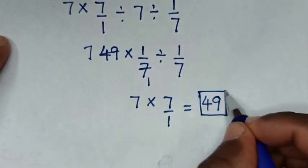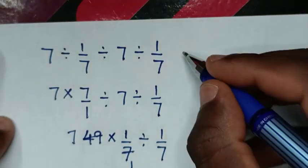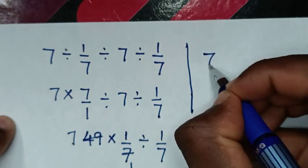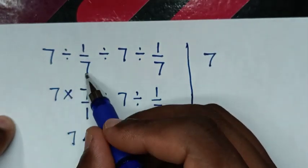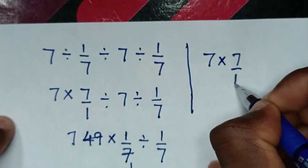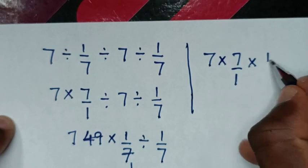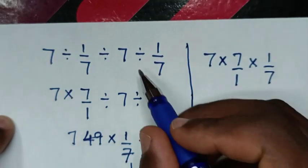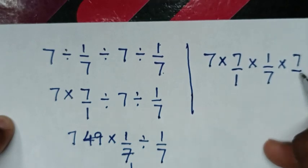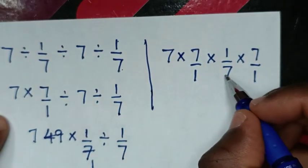To solve using another method, starting from our problem: 7, then divide by 7 divided by 1 over 7, which is the same as times 7 over 1. Then divide by 7, which is the same as times 1 over 7. Then divide by 1 over 7, which is the same as times 7 over 1. Then we simplify.